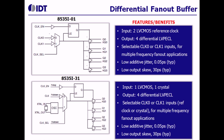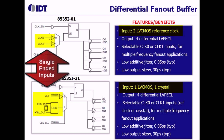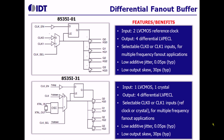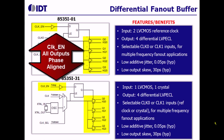Here are some more examples of differential buffers. One important thing to note is that in these cases, the input level is single-ended, so the device acts as a level translator. Second, these devices have a MUX built into them. In one case we have two single-ended signals coming in, and in the other case we have LVCMOS input and a crystal input. Also worth noting is that all output signals are synchronized with the enable signal, so they are all phase aligned.